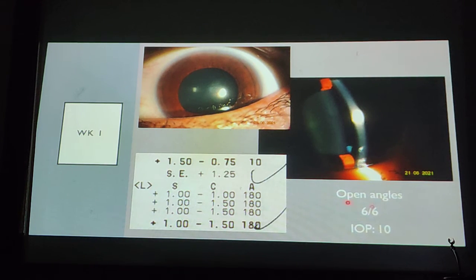On week one, the IOP was 10. Her vision was 6/6, back to normal, with open angles. Her refraction was plus 1.5 and plus 1. This is the usual scenario. On day one, the IOP becomes normalized, and by week one, the vision becomes normalized.